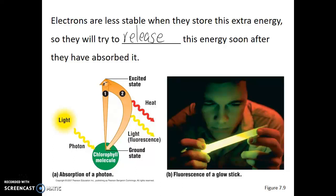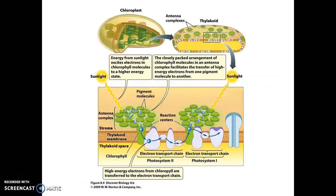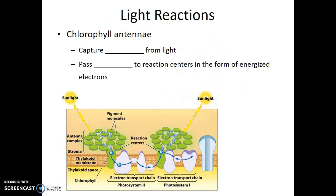In photosynthesis, the pigment chlorophyll absorbs energy from light. That energy is transferred to the electrons, taking them to an excited state. Now if nothing were to be done with that electron, it would simply release that energy and return back to its ground state. But in photosynthesis, when that electron becomes energized, before it has a chance to release that energy, it is taken away from the pigment and transferred through a series of proteins in an electron transport chain. This electron transfer is a series of redox reactions.